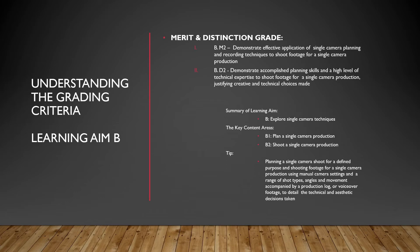Learning Aim B. This is accomplished in two ways. For a Merit, you need to demonstrate effective application of single camera planning and recording techniques. For a Distinction, you need to demonstrate accomplished planning skills to a high level of technical expertise. The objective here is basically to start off in the written work to demonstrate an effective application — in other words, all the documents for pre-production: script, shooting script, storyboard, etc. Accomplished means that all these documents need to be thoroughly thought through, tidy, easily understandable and very detailed.